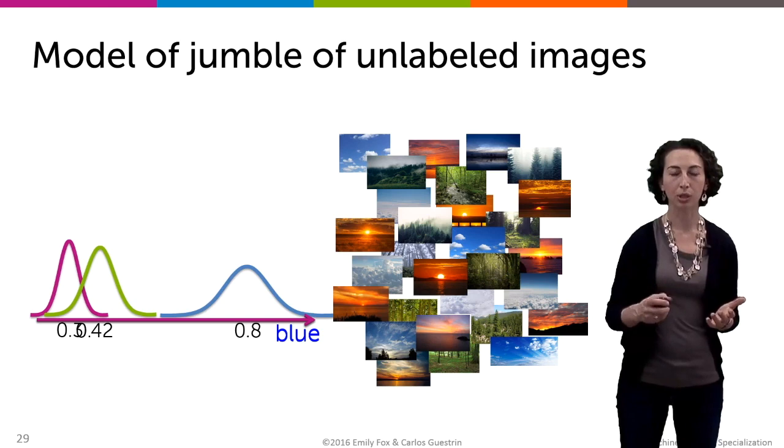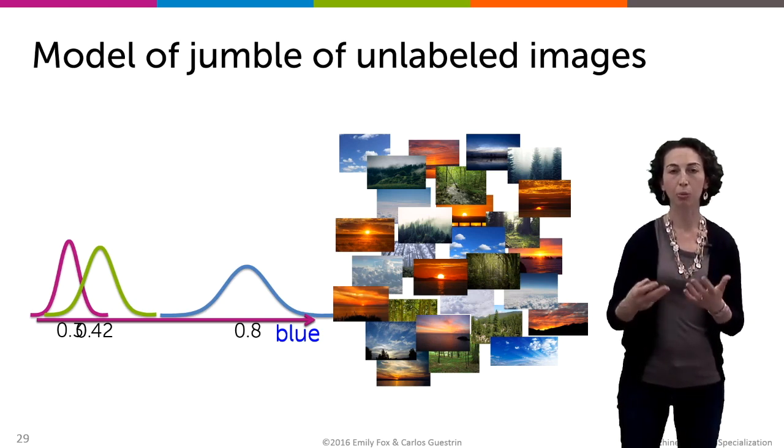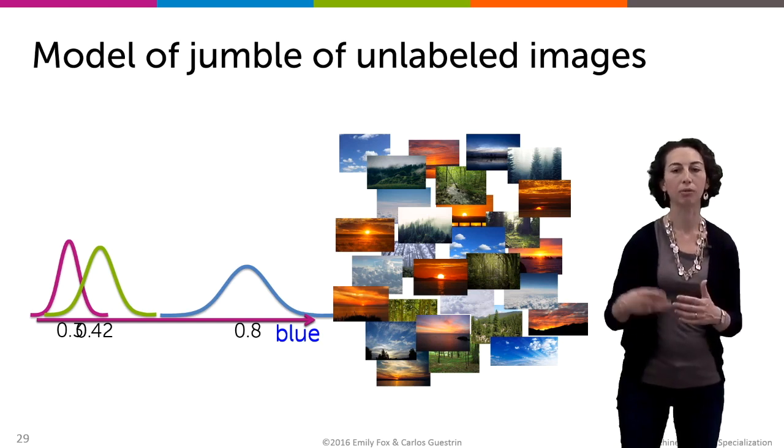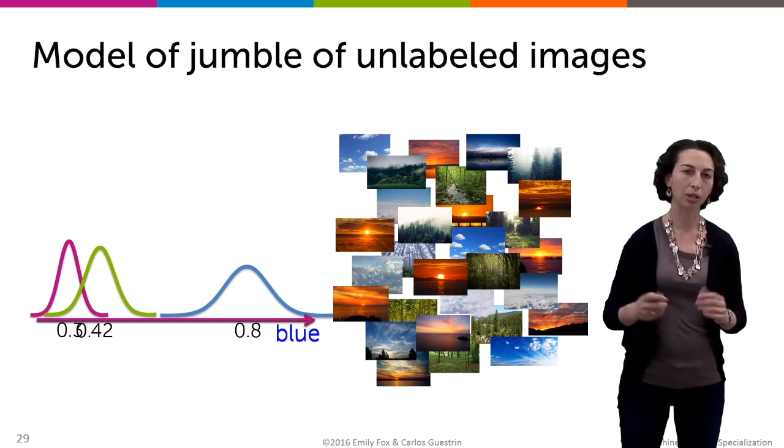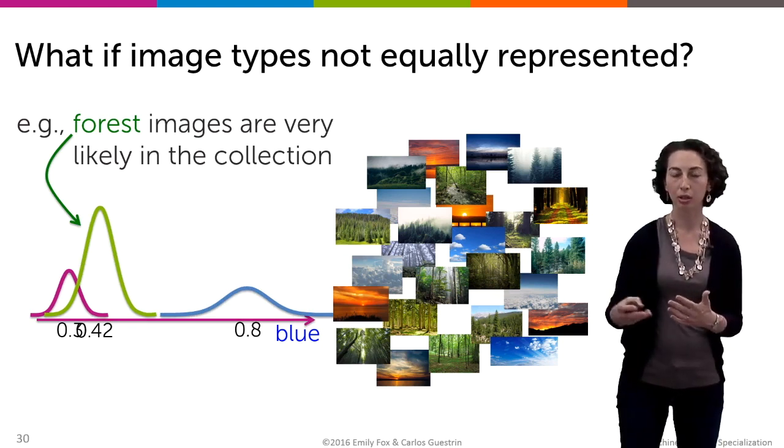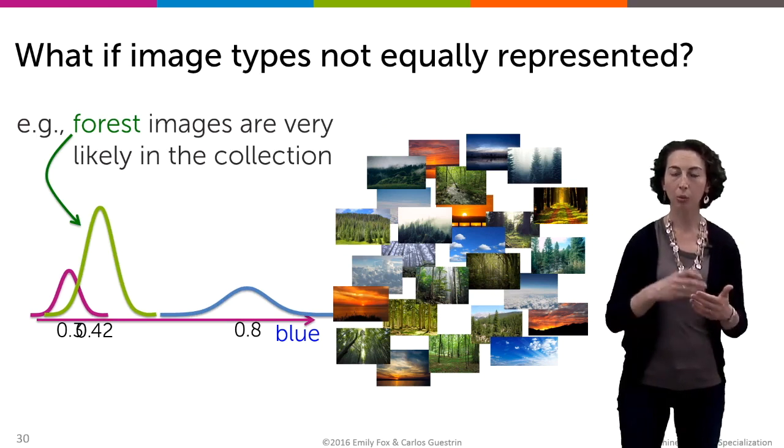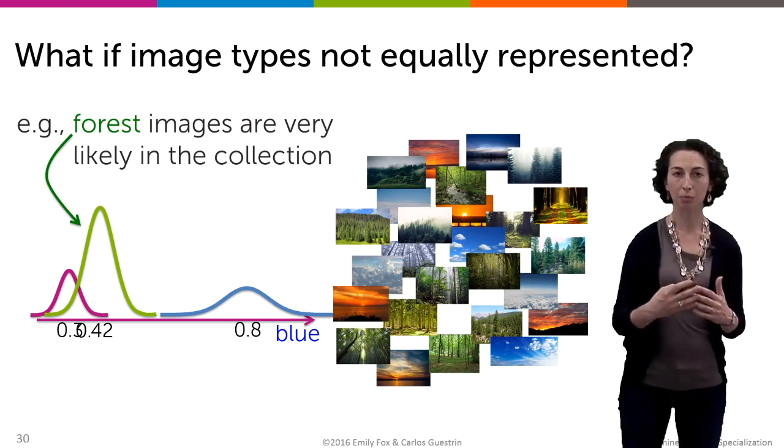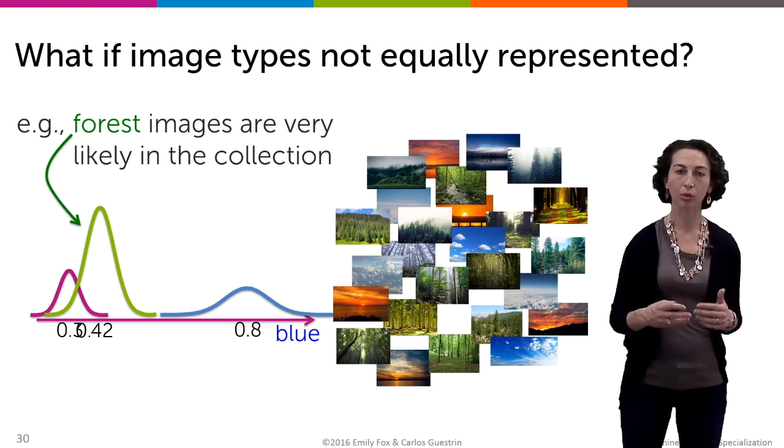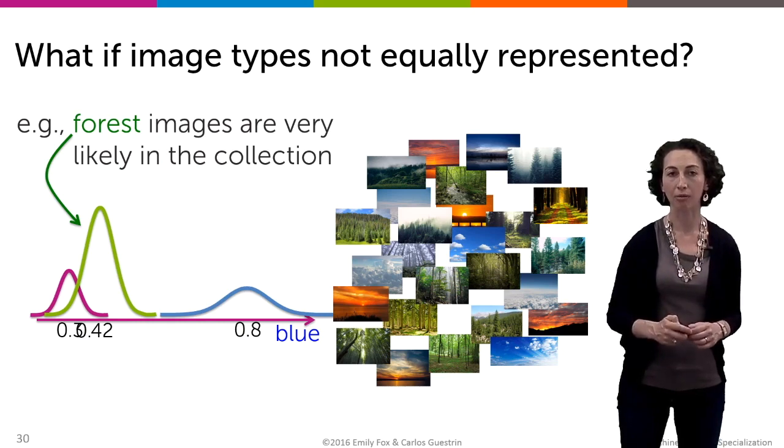But this simple averaging assumes that each one of these different categories appears in equal proportion in our data set. But what if there are many more forest images than sunset or cloud images in our data set? Well, in that case, we'd want to more heavily weight the forest distribution in this mixture, in this average. So we would do a weighted average over these different distributions where the forest distribution gets higher weight in that average.